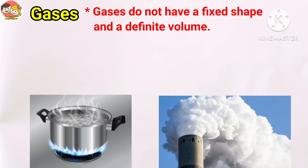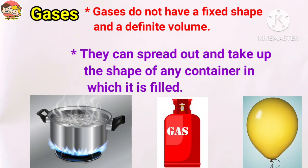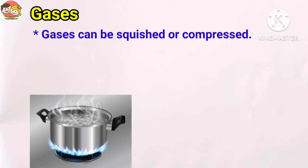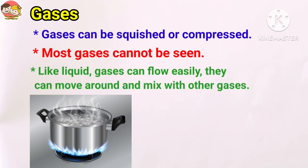Gases don't have a fixed shape and a definite volume. They can spread out and take up the shape of any container in which they are filled. Gases can be squeezed or compressed. Gases are all around us, but most gases cannot be seen — they are invisible. Air is a mixture of many gases. Like liquids, gases can flow easily; they can move around and mix with other gases.